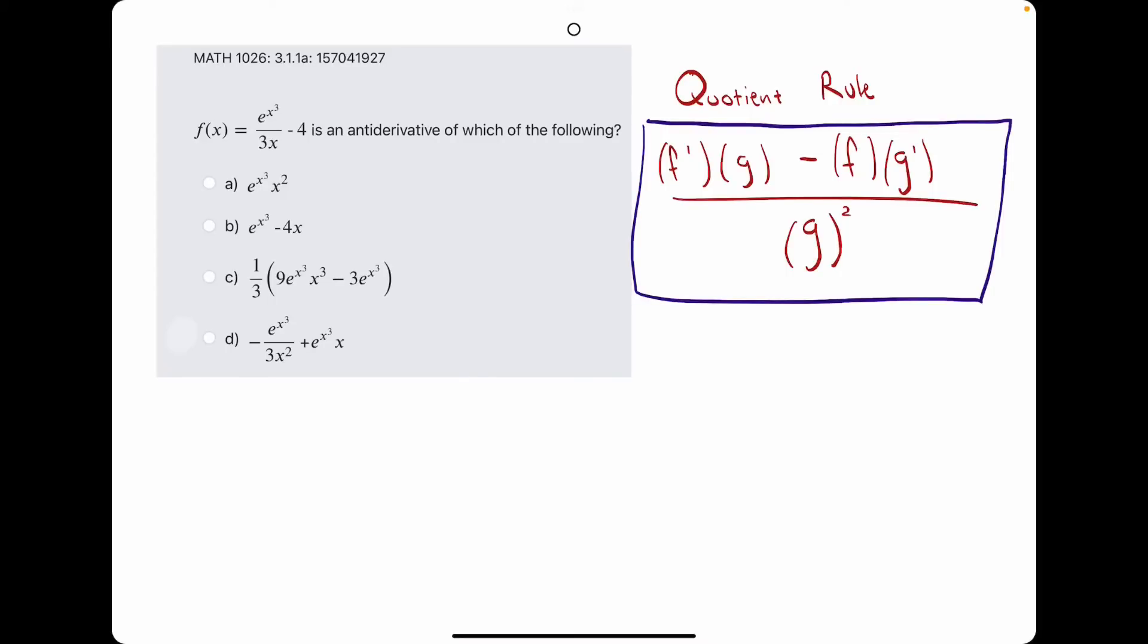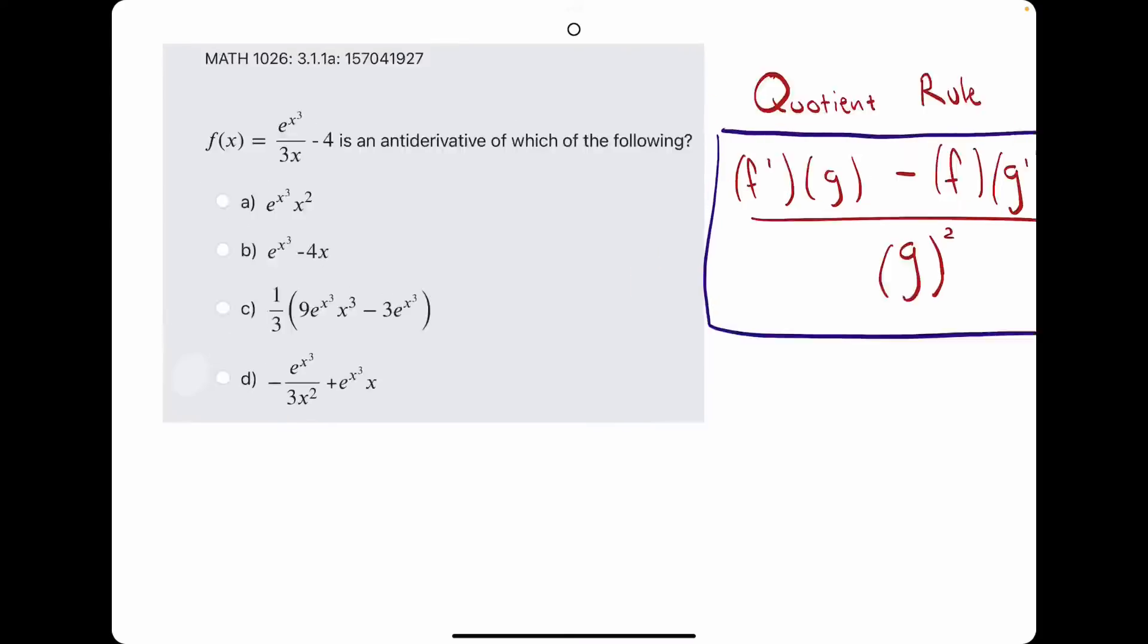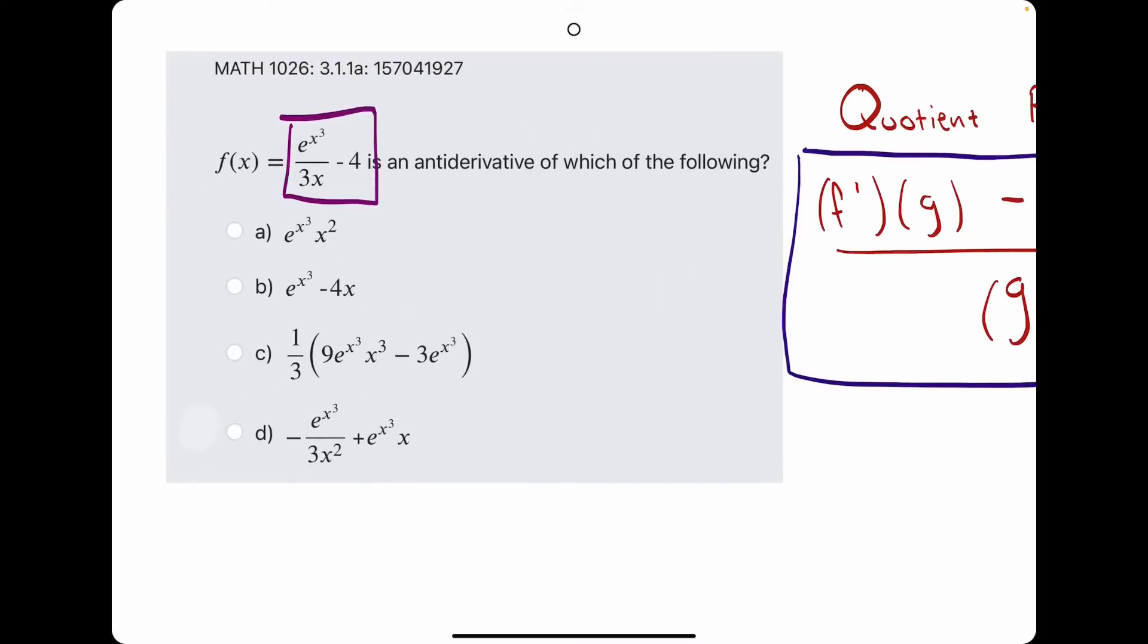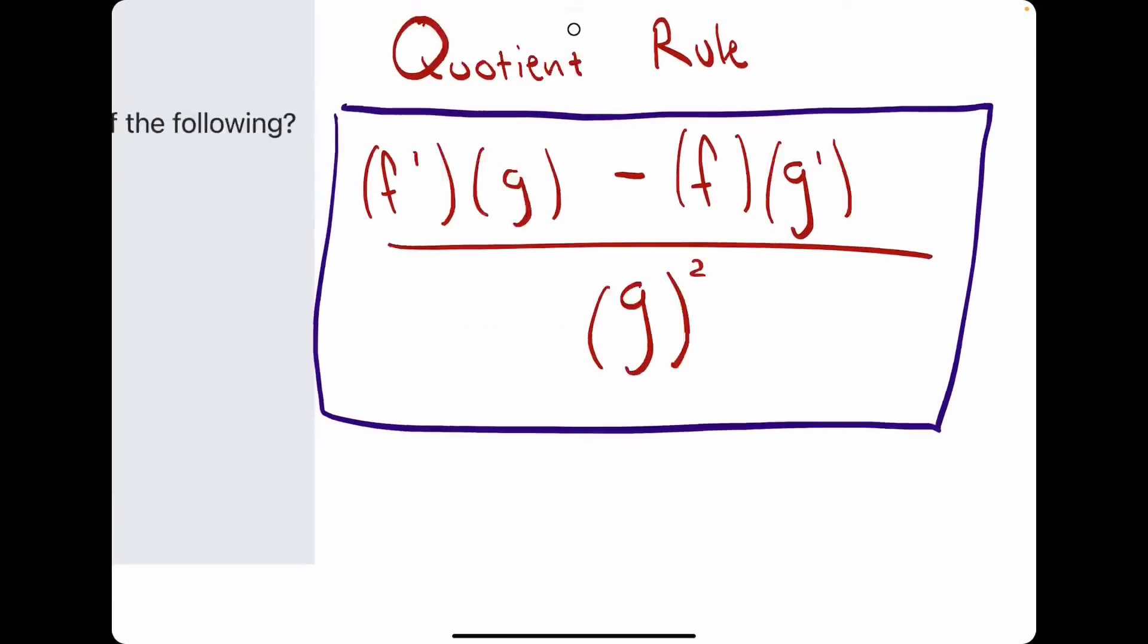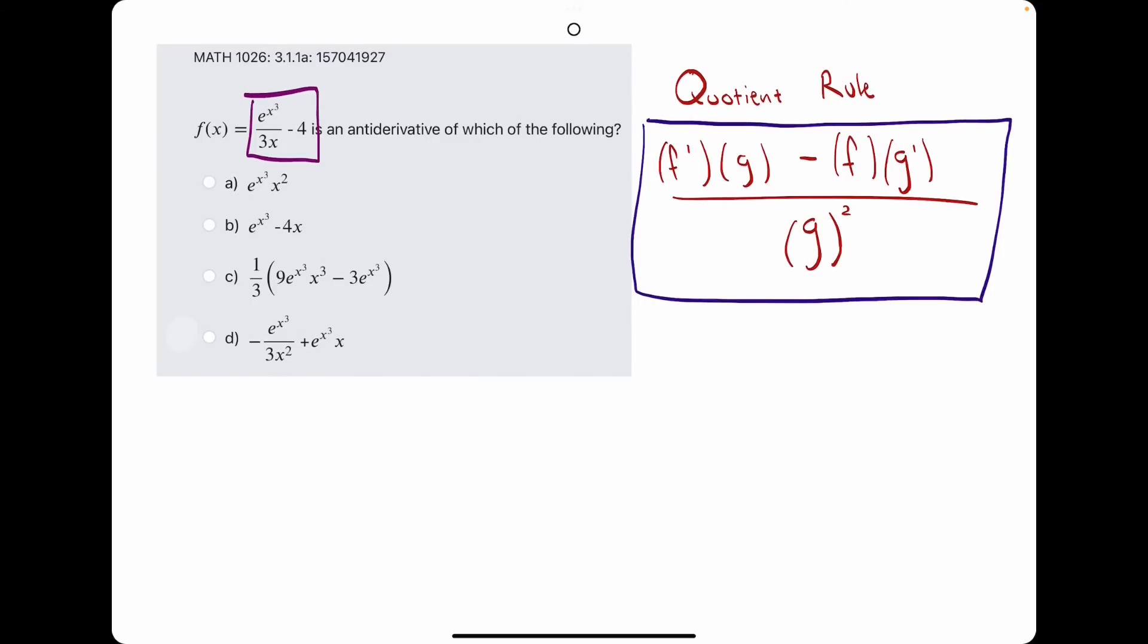Okie dokie. In this problem, they give us a function f, and they ask f of x is an antiderivative of which of the following? So basically, they're saying, if we took the derivative of this, which one of these functions do we get as a result?